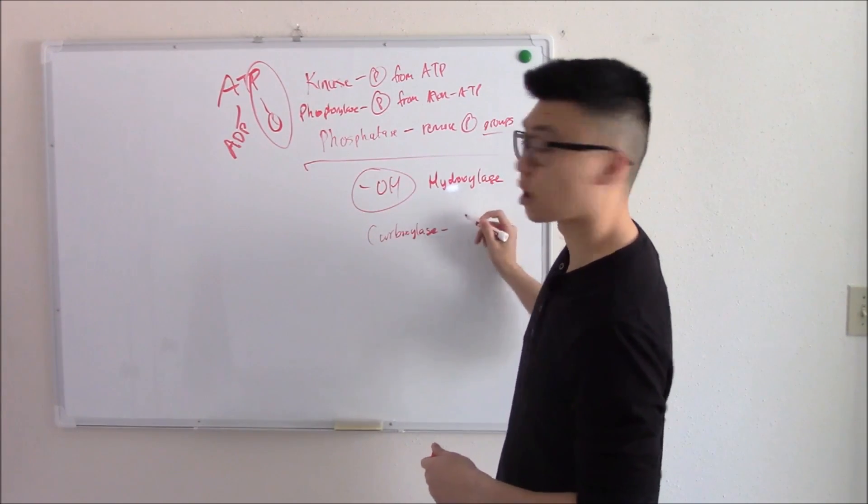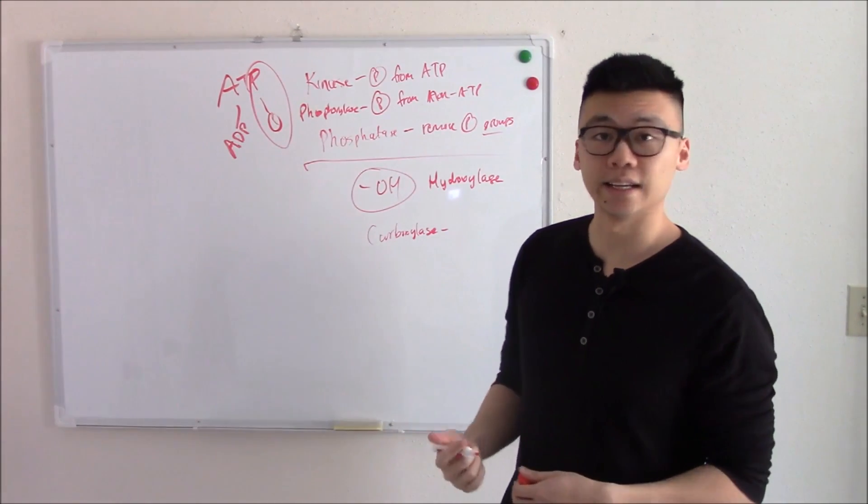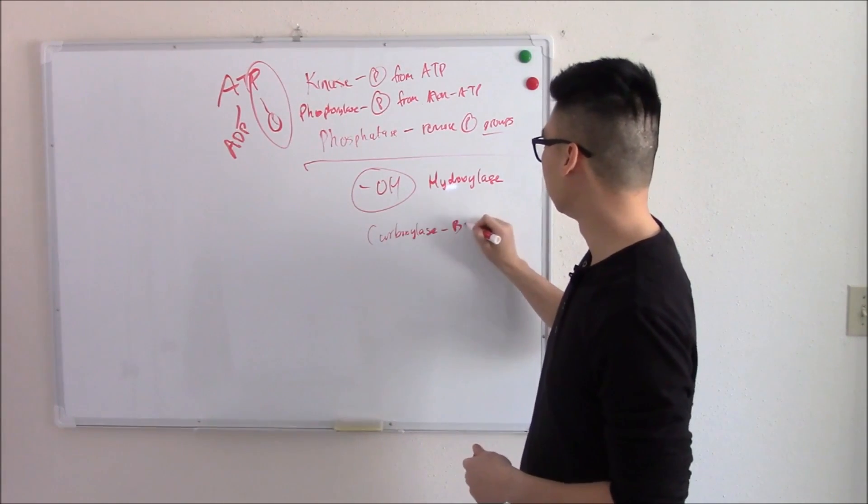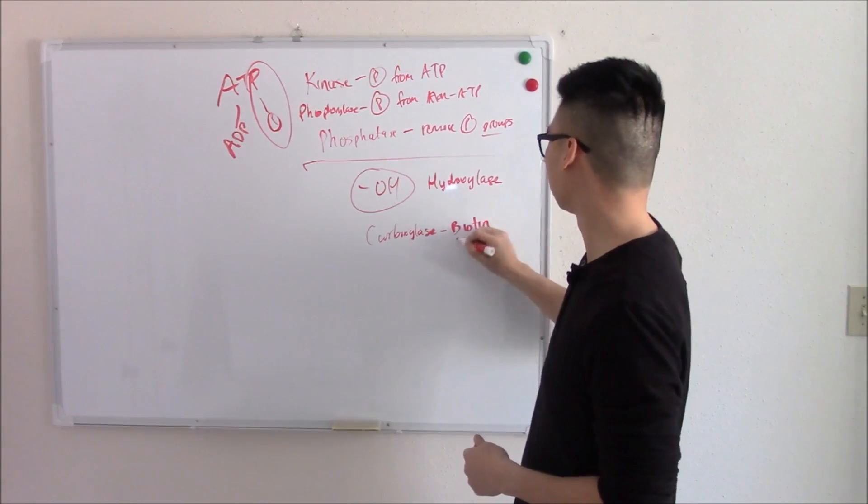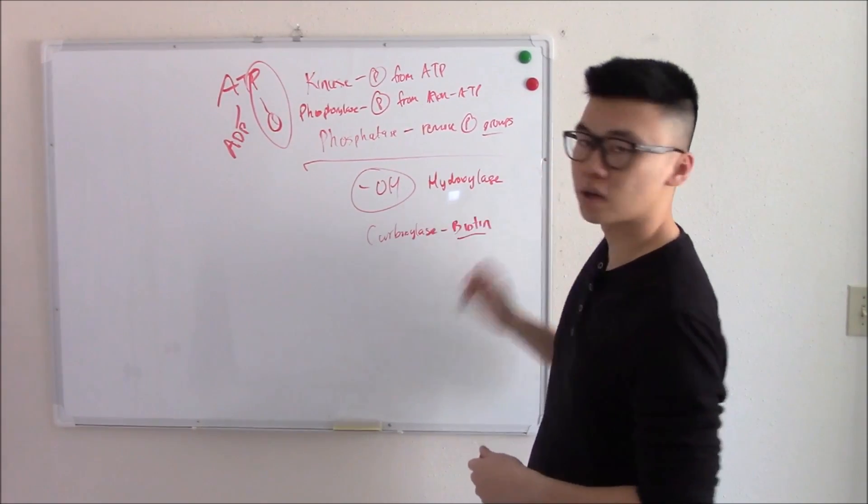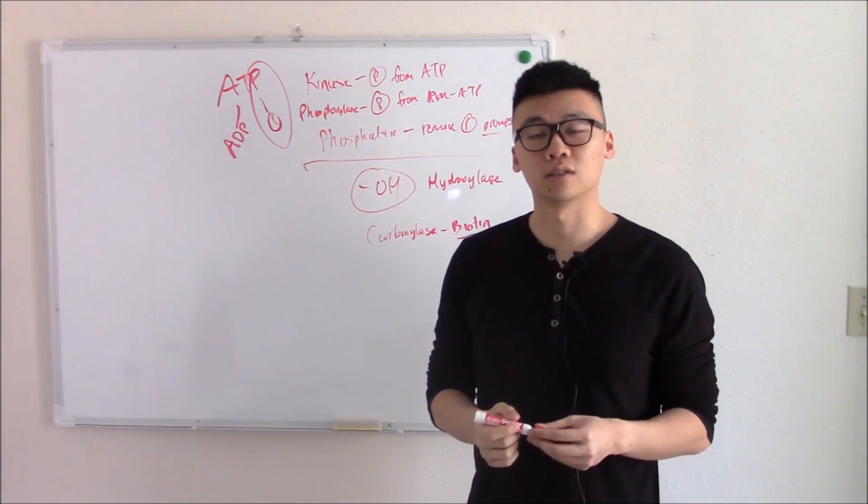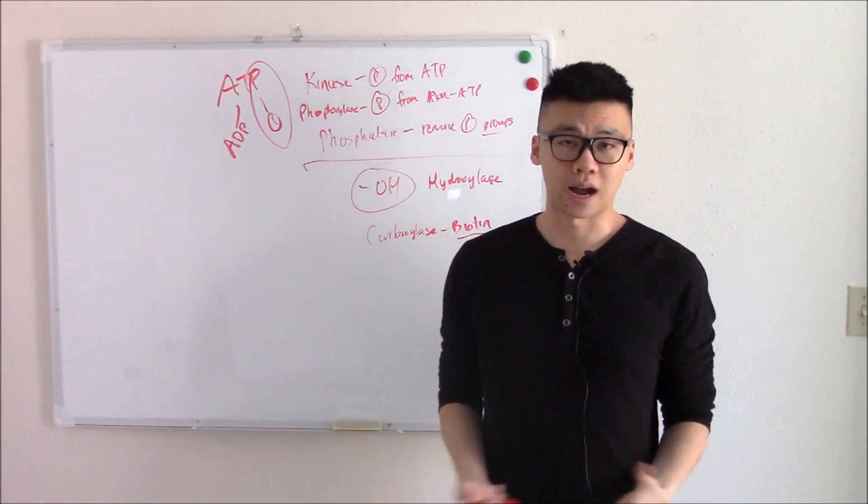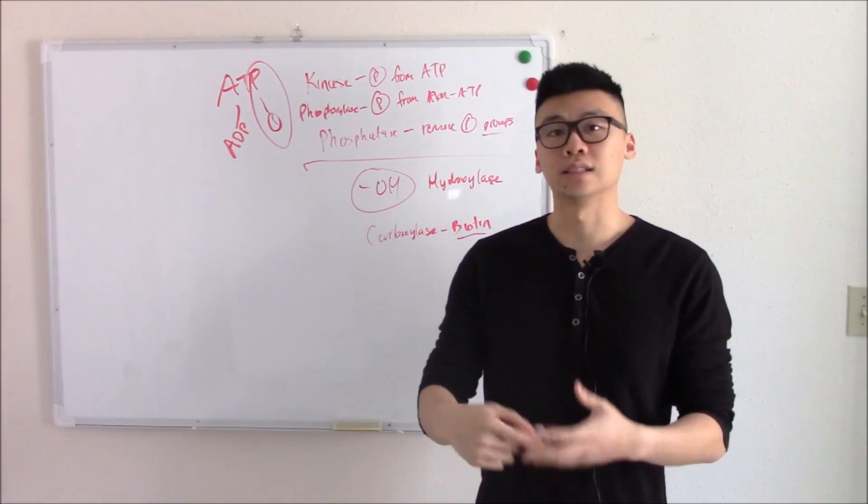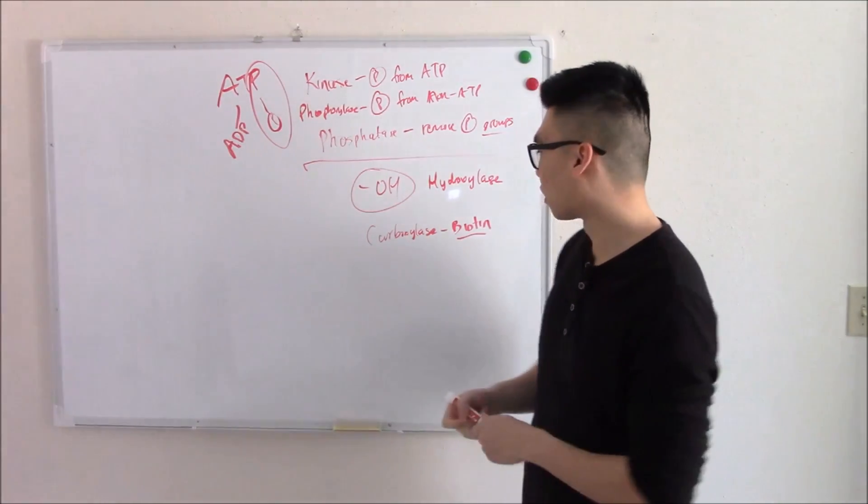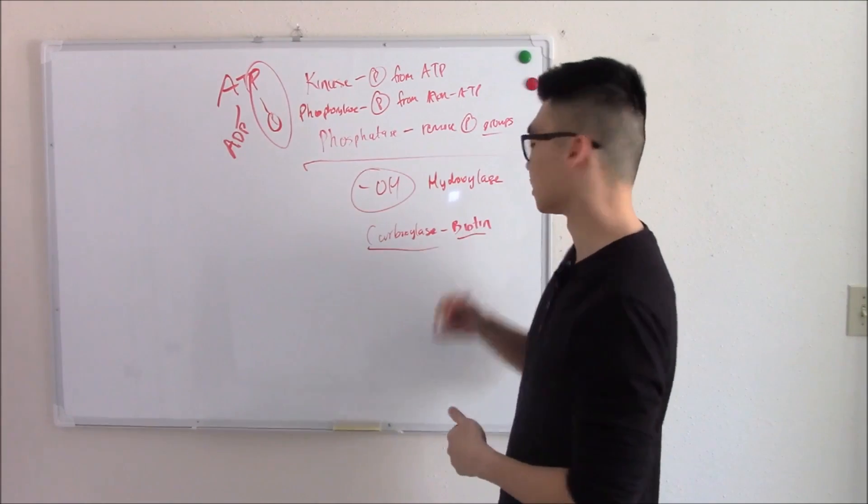Something you should be aware of is that carboxylases need a friend. They need biotin. Common questions on carboxylases are they'll talk about a patient deficient in biotin, and then they'll ask you what enzyme wouldn't be working. Look for anything that has carboxylase in it.